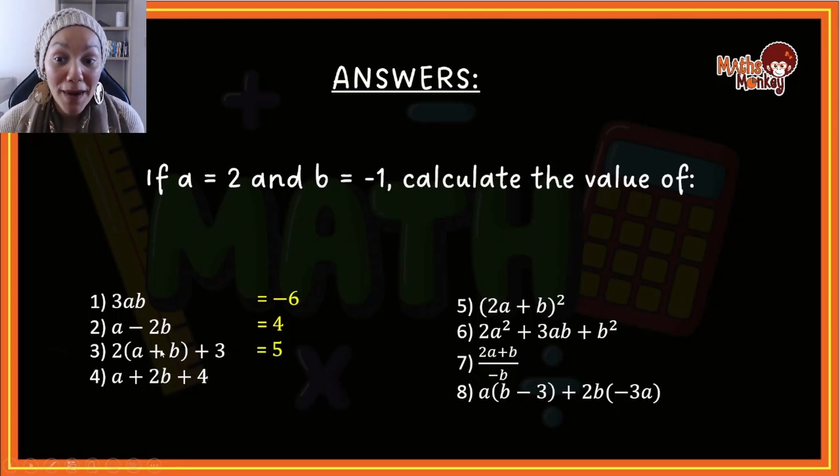Number four, your answer is four. By number five, your answer is nine. Number six, your answer is three.